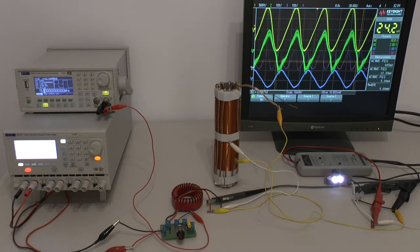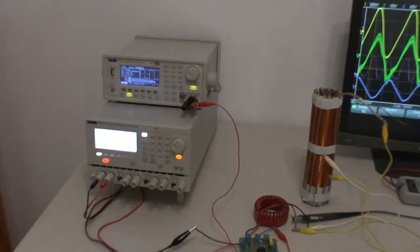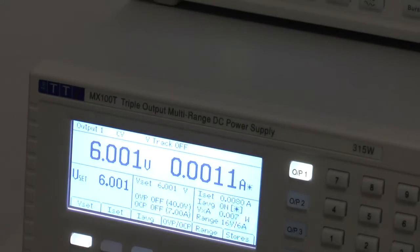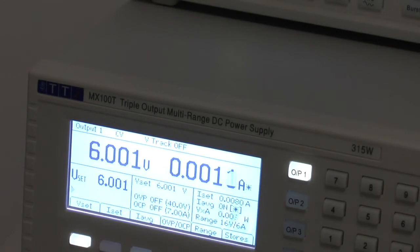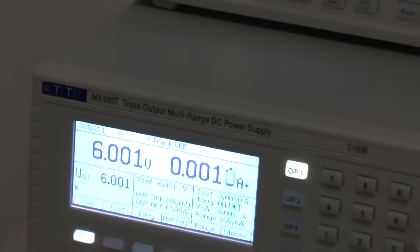I will zoom in now on what we are currently producing on the power supply. The power supply measures 6 volts and 1 milliampere. That means you can see here on the right-hand side 7 milliwatts—that is what is currently fed into the system.